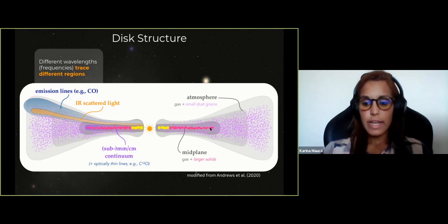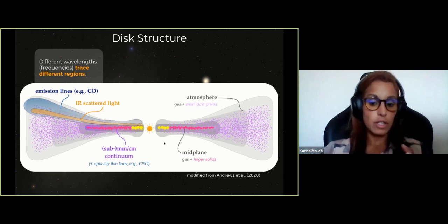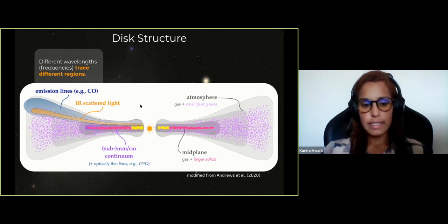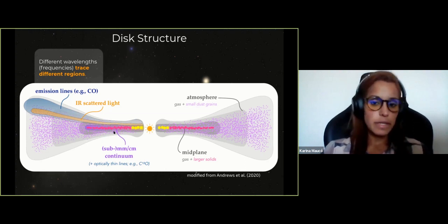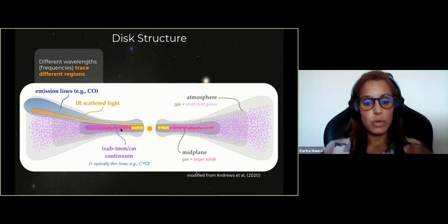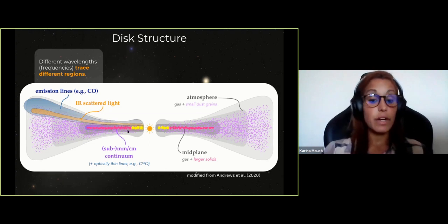In this sketch, the gray areas indicate the gas surface density distribution — a monotonically decreasing distribution with the densest parts close to the star. Different wavelengths trace different regions: infrared scattered light is only sensitive to the surface of the disk where small grains are, while millimeter ALMA observations probe deeper layers close to the midplane where large particles reside. To get the full picture, you always need multi-wavelength observations.